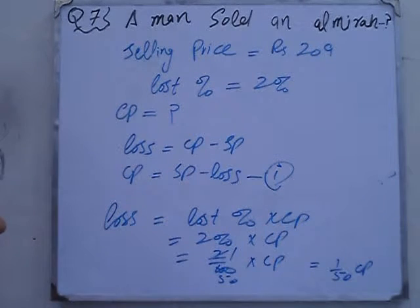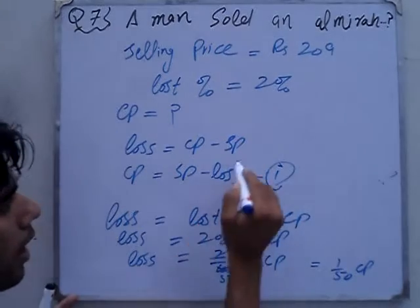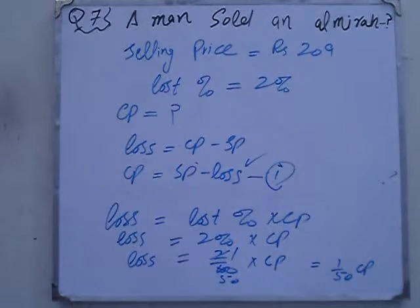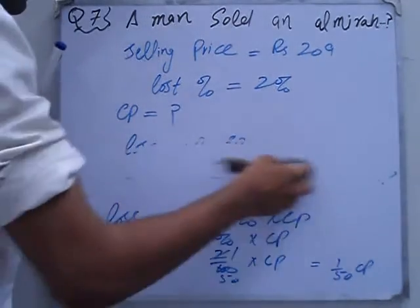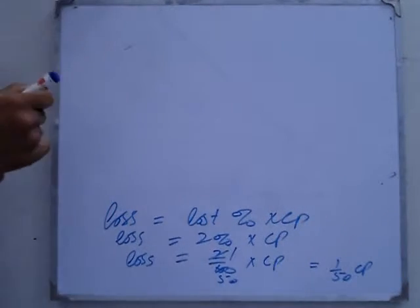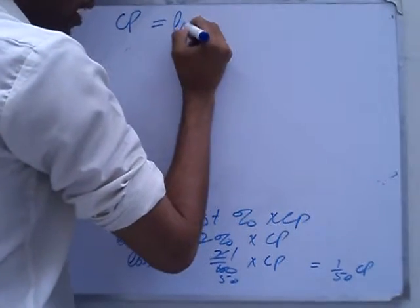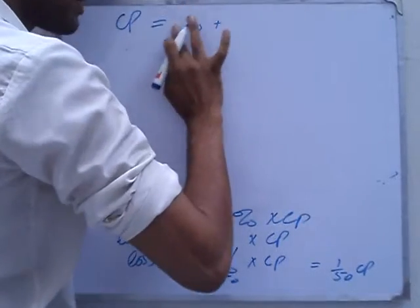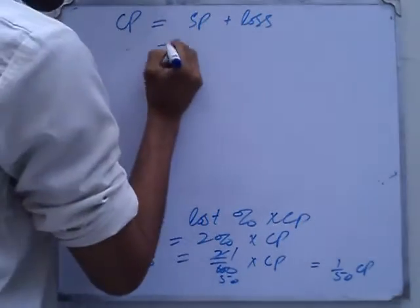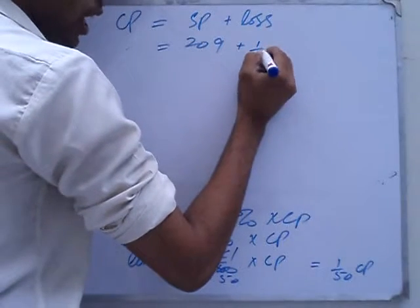Now from formula number 1, we also got the loss. Loss has been found. Selling price we know is 209. So we will put values into this formula and find the cost price. Cost price is equal to selling price plus loss — that is, cost price equals 209 plus 1 over 50 of cost price.